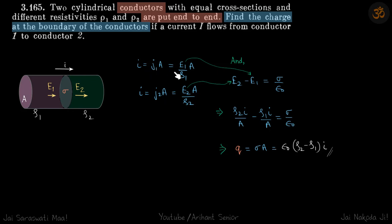So its value, we are going to find how much charge develops by using the same thing, by equating the currents on both sides. So in the first case, I is equal to J1A, and J1 is E1 by Rho1.